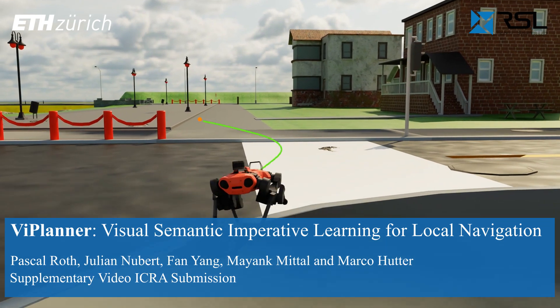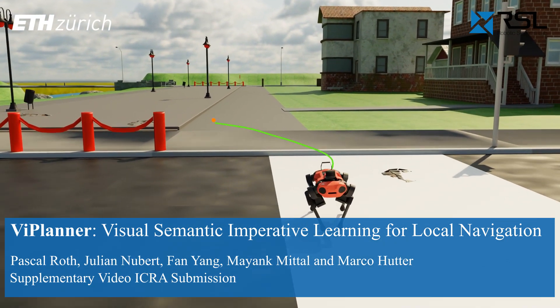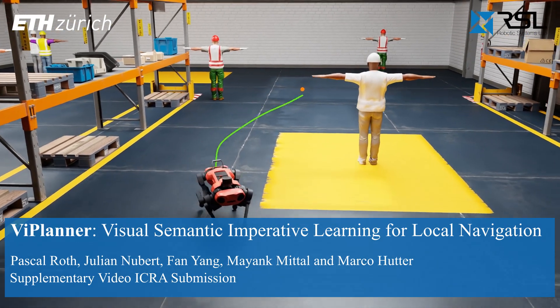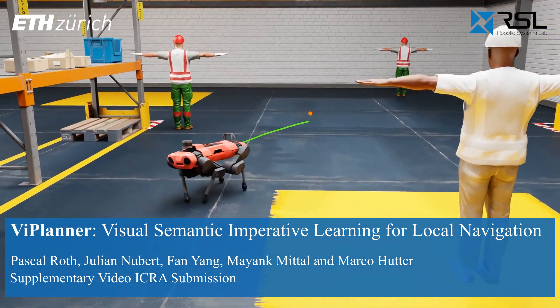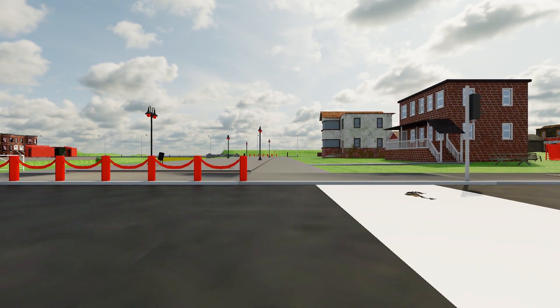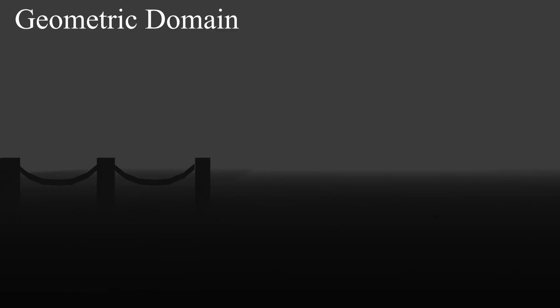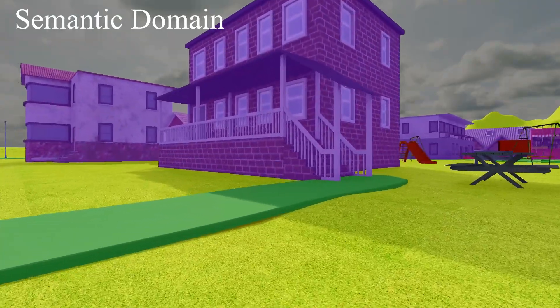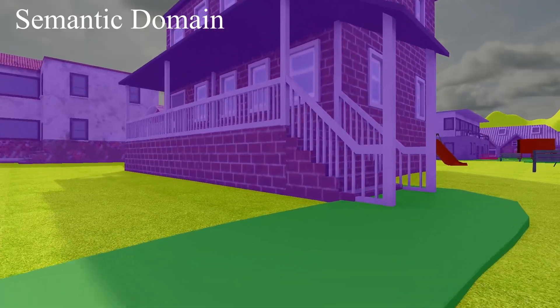In this video, we provide supplementary content to our submission VIP Planner – Visual Semantic Imperative Learning for Local Navigation. Established approaches have primarily focused on geometric navigation solutions. However, this domain is insufficient to interpret different terrain types and their affordances, such as road and crosswalk in the given example. Integration of semantic information can address these limitations.